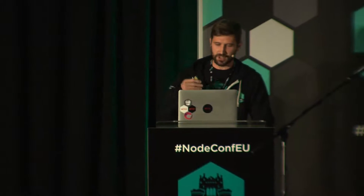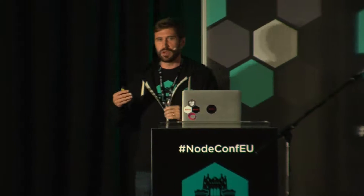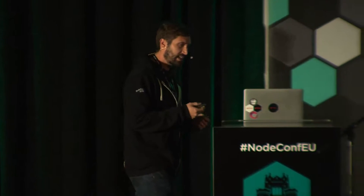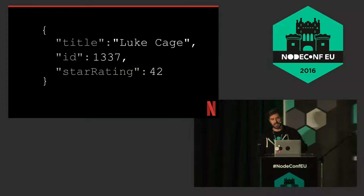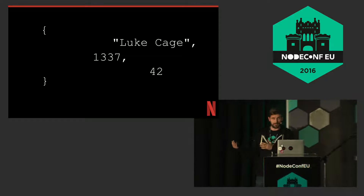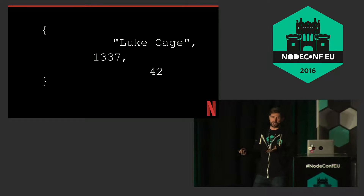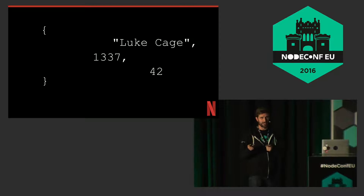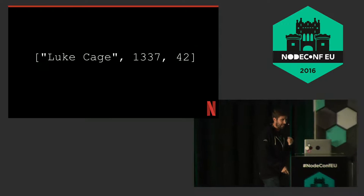How does FlatBuffers exactly work? I think it's a little bit easier to just build an algorithm ourselves of roughly how it works. Let's take the exact same object we were serializing in JSON and just remove the keys. Now we just have the values. We can't use an object anymore, so what should we use? An array!